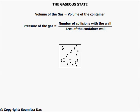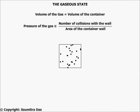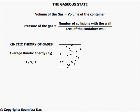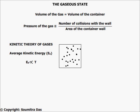Now let us see what happens to the molecules when temperature is increased. The molecules gain kinetic energy as a consequence of the kinetic theory of gases, and the velocity of the random motion increases.